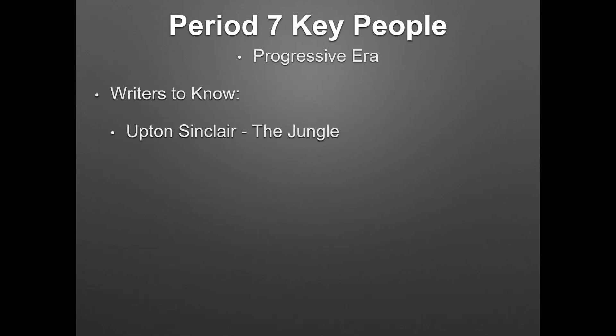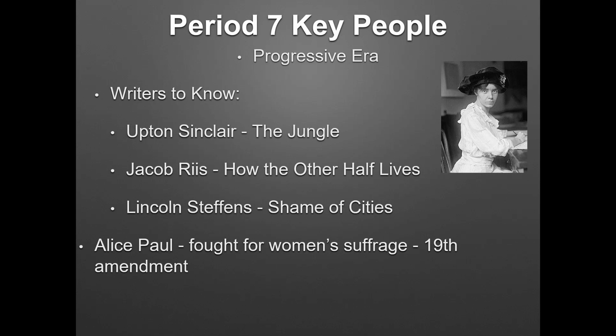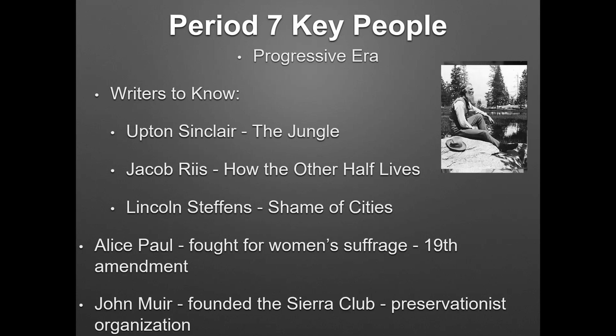Other key people from the Progressive Era: Upton Sinclair wrote The Jungle, which talked about the inhumane and unsanitary conditions in meat factories. Jacob Riis wrote How the Other Half Lives, a photo book showing the horrible living conditions in inner cities for new immigrants. Lincoln Steffens wrote Shame of the Cities, talking about political corruption of senators and political machines. Alice Paul is going to fight for women's suffrage — she forms the National Women's Party and helps the 19th Amendment get passed. John Muir is going to found the Sierra Club, one of the first preservationist clubs in America for the environment.